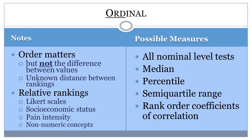Remember that the values in an ordinal scale simply express an order. All nominal-level tests can be run on ordinal data. Since there is an order to the categories, the numbers assigned to each category can be compared in limited ways beyond nominal-level tests. It is possible to say that members of one category have more of something than the members of a lower-ranked category. However, you do not know how much more of that thing they have because the difference cannot be measured.